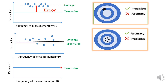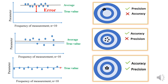In the third graph, 10 observations are taken for a particular parameter and the true value is calculated by finding the mean. When the lab performs the test, the values fall on the true value — the new average and the true value are the same. Such a result, where repeatability is high and the true value is obtained consistently, is known as the test being both accurate and precise.